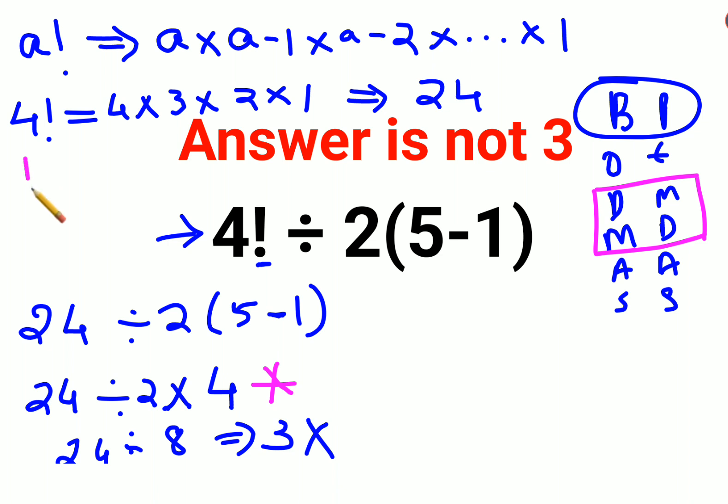Then all you have to do is follow the rule of left to right. Means we'll do the first operation which comes first from our left hand side and then proceed. So first operation is 24 divided by 2, that is 12. And then we'll multiply it with 4. So 12 into 4, answer comes out to be 48.